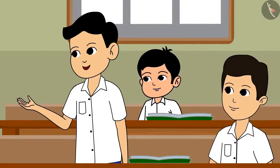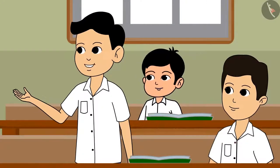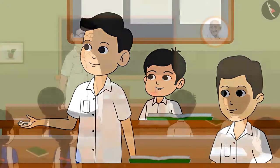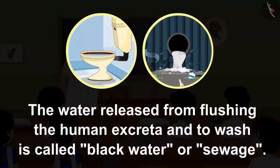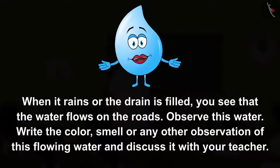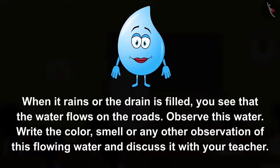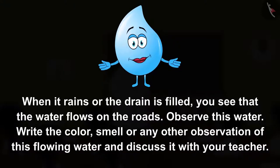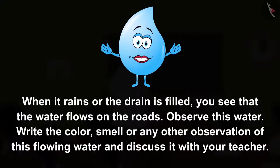Sir, there is water that we used in toilets too. Right. The water released from flushing human excreta and to wash is called black water or sewage. Children, when it rains or the drain is filled, you see that the water flows on the road. Observe this water. Write the colour, smell or any other observation of this flowing water and discuss it with your teacher.